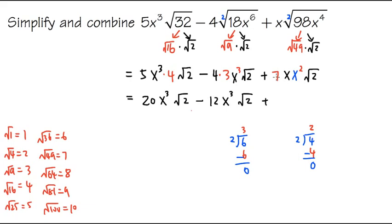And then plus, this is 7 times x times x squared. This is x to the 1st, x to the 2nd. All together, we have x to the 3rd. So we have 7, x to the 3rd power, and the square root 2. Is there anything else that we can do? Yes, we can. Because everybody here, they all have x to the 3rd power square root 2.